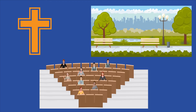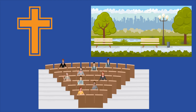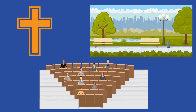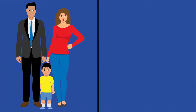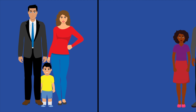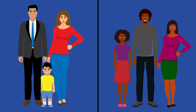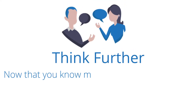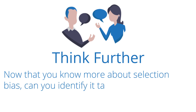In order to prevent this bias, the researchers could generate a list of random places from which to recruit participants. This list could consist of religious and worship centers, community centers, public parks, and more — giving more people than just those in senior homes a chance to participate and to equally represent the intended target population. Combating biases is the first step to finding the truth. Now that you know more about selection bias, can you identify it taking place in your own life?